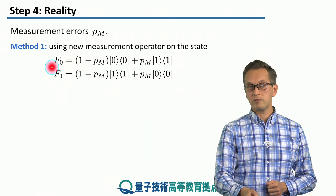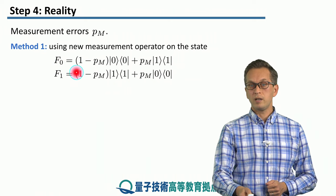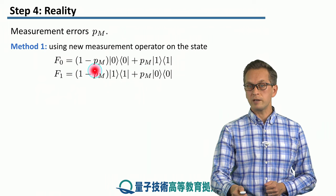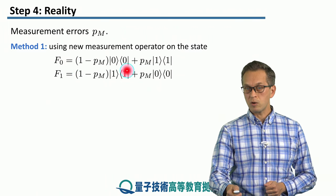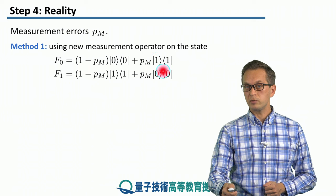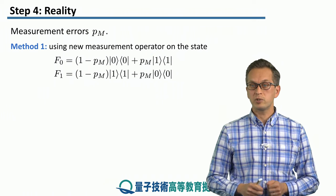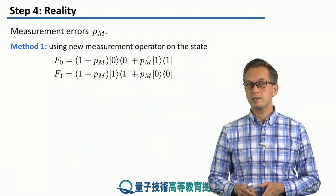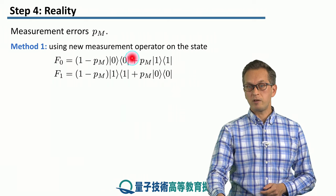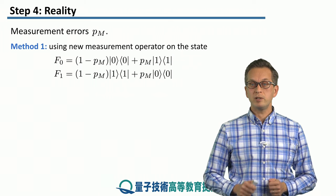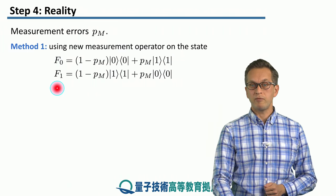And now F0 is not projecting only onto the zero eigenspace. It has a chance to project onto the one eigenspace. So we write 1 minus PM times the projector A0 plus the measurement error PM times the projector A1.